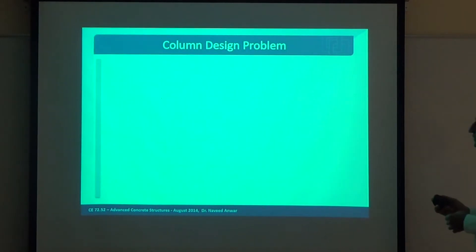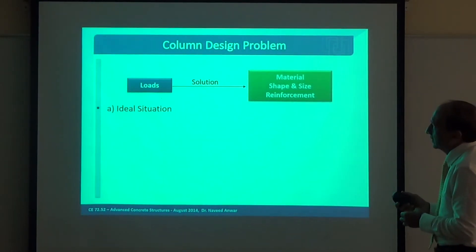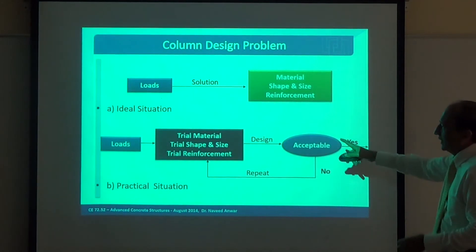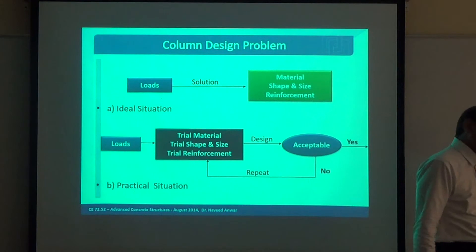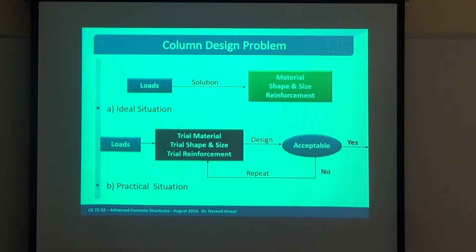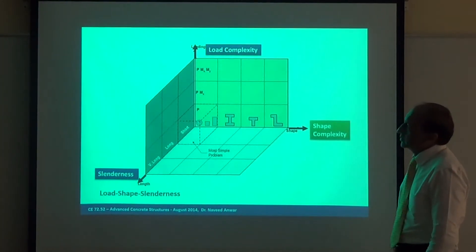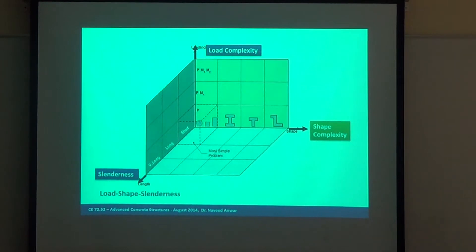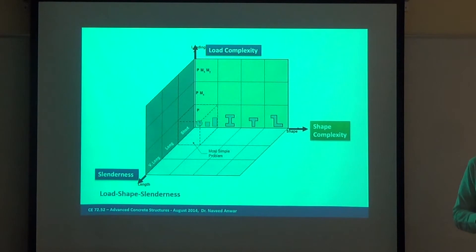If you look at the column design problem, we have to do a lot of iteration. We cannot find the solution directly, which you can do for beams. When the load is given, you can find the reinforcement for a beam directly. But for columns you cannot, and column design has three complexities which many engineers may know but do not realize clearly.